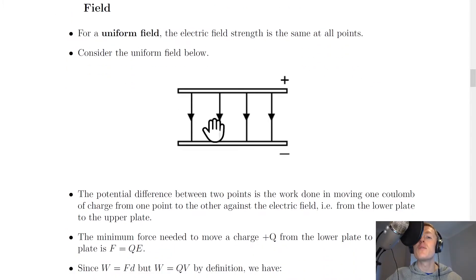Consider the uniform field below. So let's say we've got a positively charged plate on the top and a negatively charged plate on the bottom. The electric field lines will go from positive to negative down the way in this case.